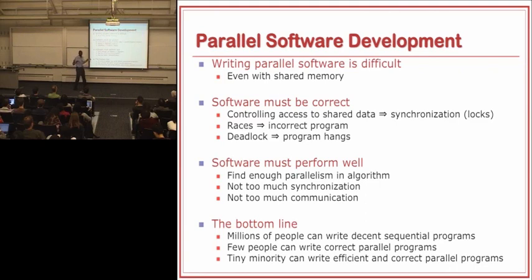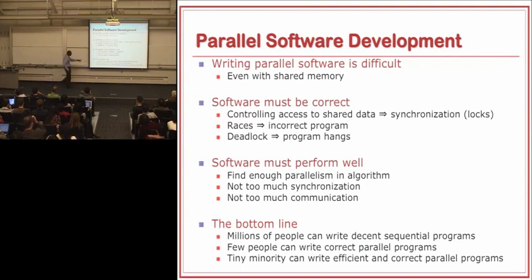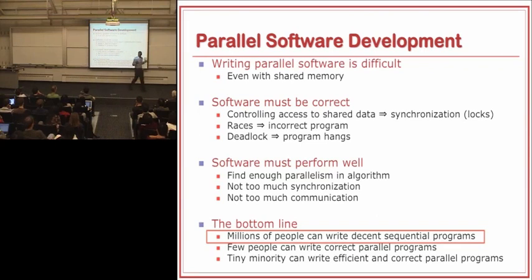The bottom line: there are lots of smart people who can write decent sequential programs, but few people can actually write correct parallel programs because of all these locking issues. And there's only a tiny few gurus who can write parallel software that is both correct and performs really well. If you have this problem, how do you produce all the software that's going to run on all these multicore devices? One idea: if millions of people can write decent sequential programs, why can't we take those programs and turn them into parallel programs?